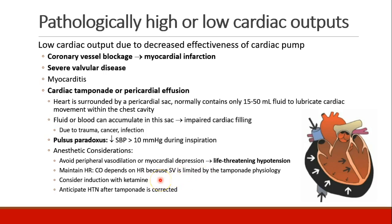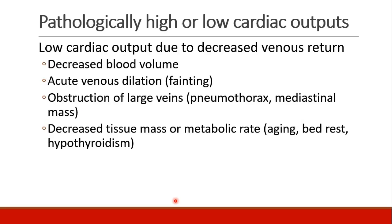These patients need to maintain their heart rate — they are usually tachycardic. Since stroke volume will be low due to low ventricular filling, the only way to maintain cardiac output is through heart rate. Giving a drug that drops heart rate could push them into heart failure and shock. Many clinicians use ketamine as an induction drug because it actually increases heart rate. Once you correct the tamponade, you may see hypertension after the problem is resolved. Patients can also have low cardiac output from decreased venous return — bleeding, hypovolemia, acute venous dilation from fainting, large vein obstruction from pneumothorax or mediastinal mass, or decreased metabolic rate from aging, bed rest, or hypothyroidism.